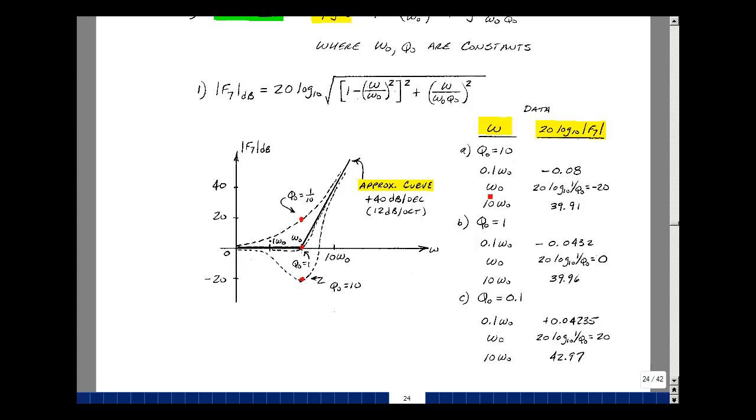Go the other way. When omega is less than omega naught, q naught equals 10, I get minus 0.08, minus 0.0432, and then plus 0.04235. These are all approaching 0 dB. An omega over omega naught is a small number, and squaring it is much smaller, so the 1 becomes important. Likewise, here there's a ratio less than 1, and depending on the value of q naught, this can also be small. So really approaching the square root of 1, which is 1, and 20 log of 1 is 0. We're seeing that as we graph the points, we're approaching 0 dB per decade.